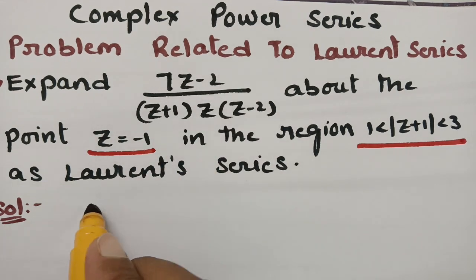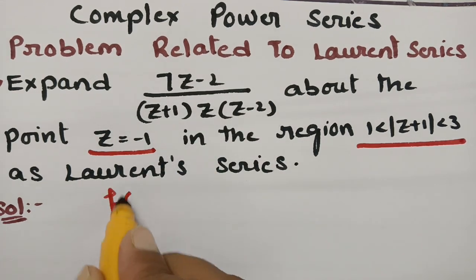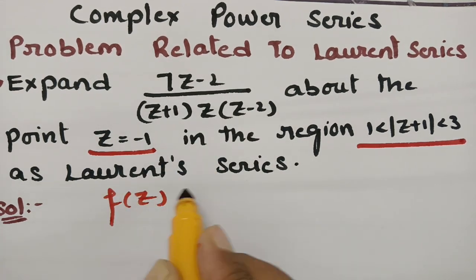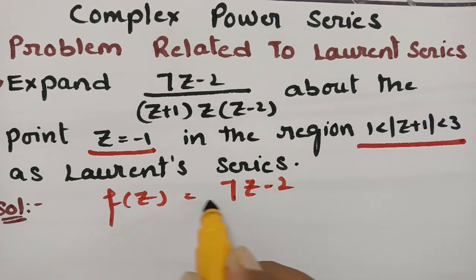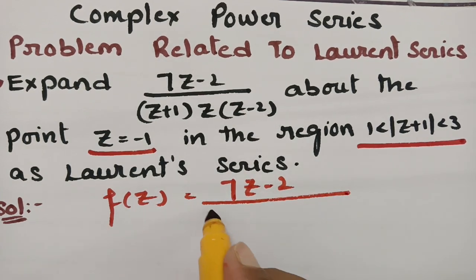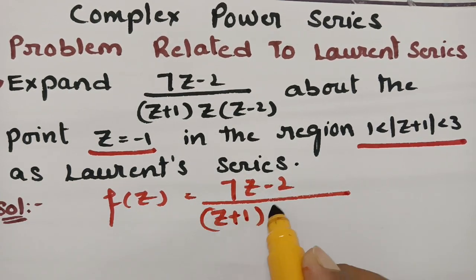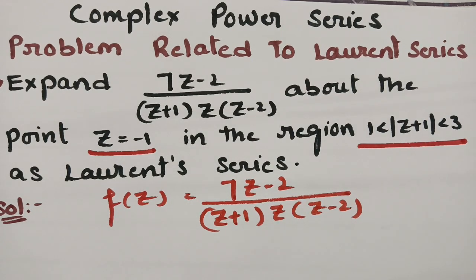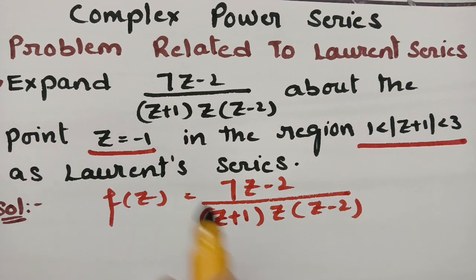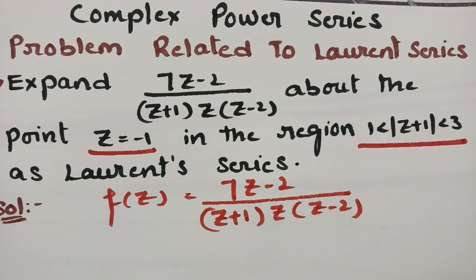Clearly from the question, f(z) is given as (7z - 2) / [(z+1)(z)(z-2)], and it is given about the point z = -1.